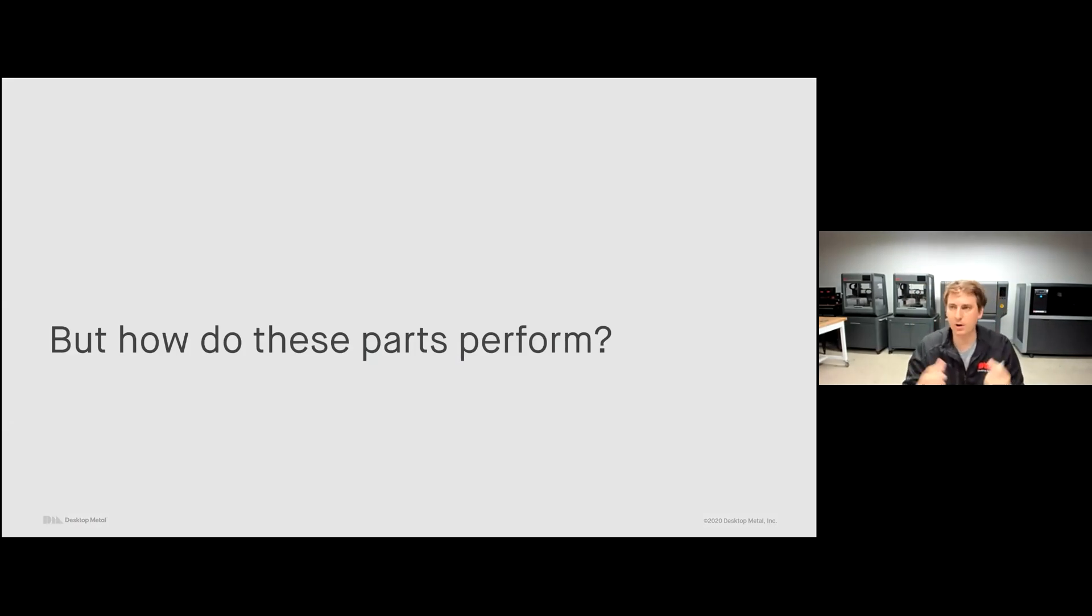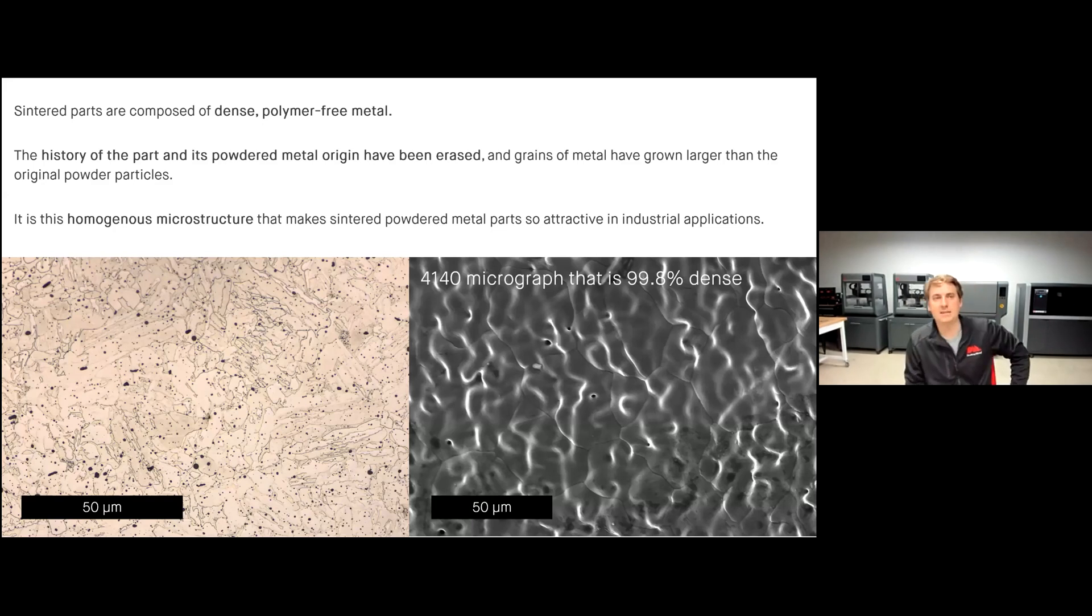So I'm sure a lot of you are thinking, how do these parts actually perform though? How do they compare to a cast component? Is it a one-to-one comparison? No, but let me explain to you a little bit about our properties and how they actually exceed those of a cast component and why this opens up so many new exciting designs. One great advantage of sintering is it creates these dense polymer-free metal parts. Since we're raising the parts to temperature all uniformly, the parts have no history of its original powder metal origin. And the grains have grown larger than those original powder particles, leading to this homogeneous microstructure. This makes sintered powder metal parts very attractive for industrial applications because they're isotropic. There's no memory of that original binder material. There's no memory that it was ever a powder part before, making it really interesting and really exciting for industrial applications because you're going to get the material properties that you expect.